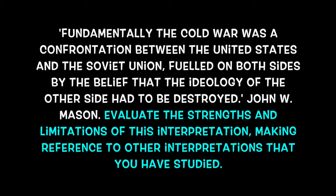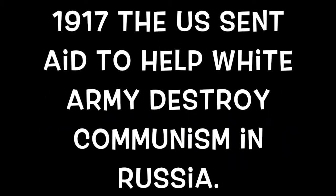Where's the proof that America was opposed to communism? Well, in 1917, when the Russian Civil War broke out after the Bolsheviks took over Russia, the USA and other capitalist countries — including Britain — gave assistance to the White Army, which was trying to fight the communist Red Army. So as soon as the communists had taken over their first government in the world, the first thing the USA tried to do was destroy it. This clearly supports Mason's theory that the USA wanted to destroy communism.